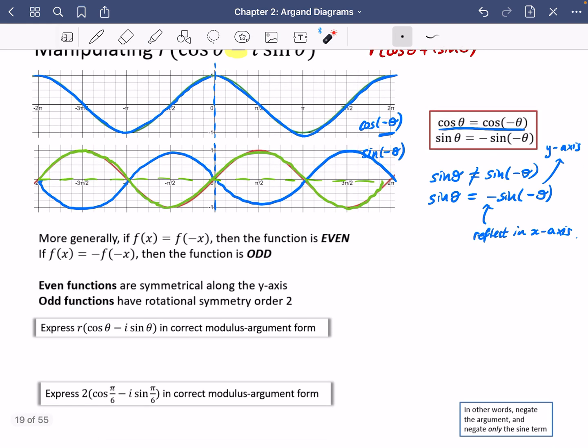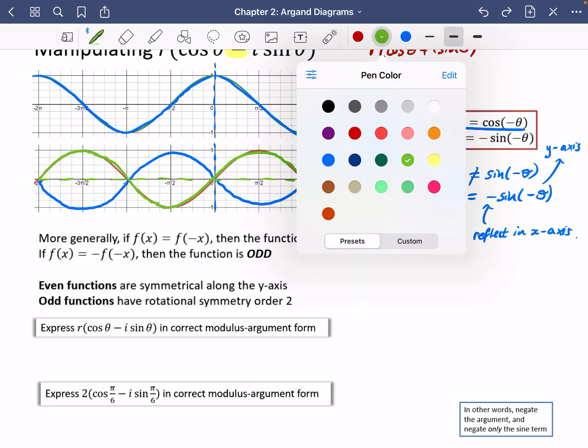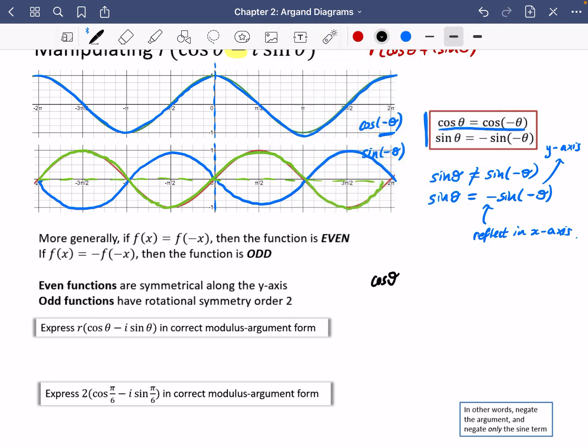So we're going to try and actually use that knowledge to express this thing that I've got here in the correct modulus argument form. So we're going to use these two facts that I've got here. In fact, I might rewrite one of the facts. I'm going to happily use the fact that cos theta is the same as cos minus theta. I'm going to slightly adapt this one here. Instead of having the minus on this side, it makes sense if I put the minus on this side and keep this one as a positive. So if I write it as minus sine theta equals sine of minus theta, I think I'm now going to be able to use these two facts that I've got here and here to adapt this thing that I've got written.